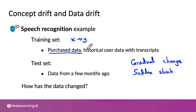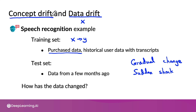Sometimes the terminology for describing these data changes is not used completely consistently. But the term data drift is used to describe if the input distribution X changes — such as if a new politician or celebrity suddenly becomes well known and is mentioned much more than before.